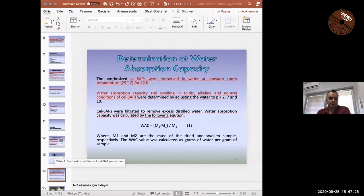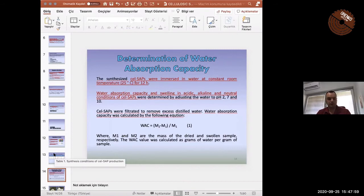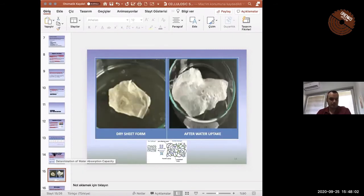Determination of water absorption capacity. The samples were immersed in water at room temperature for 12 hours. Water absorption capacity and swelling in acidic, alkaline, and neutral conditions of cellulose. The amount of cell SAP were determined. You will see the results in figure one as pH 2, pH 7, and pH 10. For calculation, we used this equation. You can see from the screen. On the screen, there are some samples of the SAP before and after water uptake.